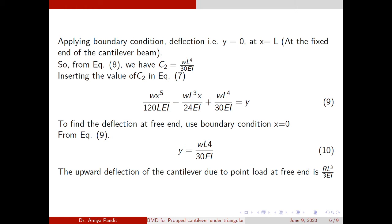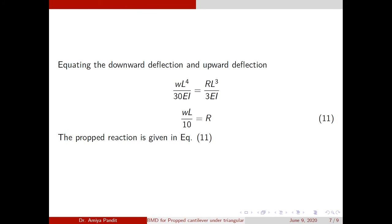This is the downward deflection of the cantilever beam due to the UVL. The upward deflection formula due to the point load at the free end is already known as RL³/(3EI). Now equating these two expressions: wL⁴/(30EI) = RL³/(3EI). Cancelling EI from both sides and solving, the propped reaction R = wL/10.